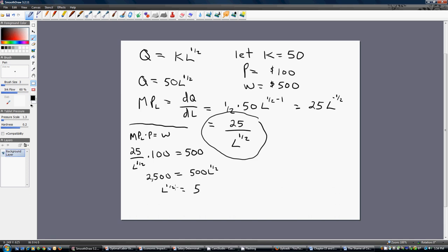So, 2,500 divided by 500 is 5. Now we're going to square both sides to get rid of that one-half. And the firm would hire 25 workers in order to maximize profit.